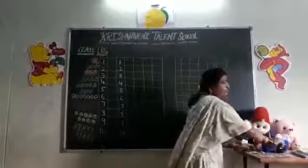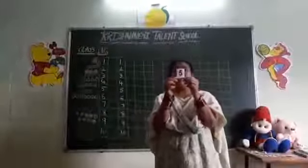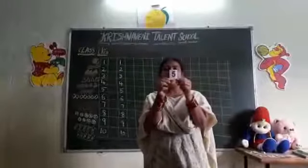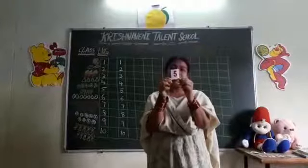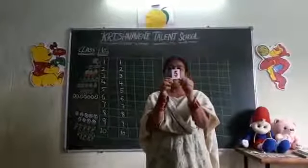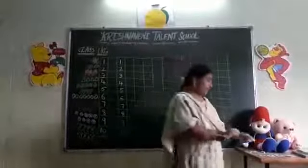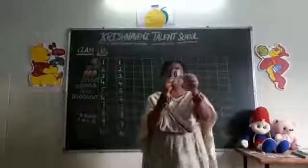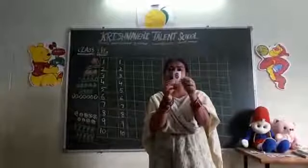5. 4 after? 5. F-I-V-E. 5. Which number is this? 5. F-I-V-E. 5. 5 after which number will become? 6. S-I-X. 6. S-I-X. 6.